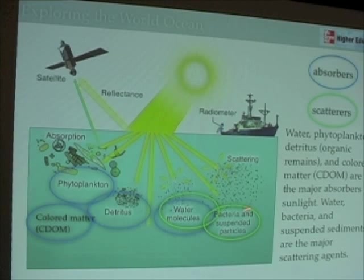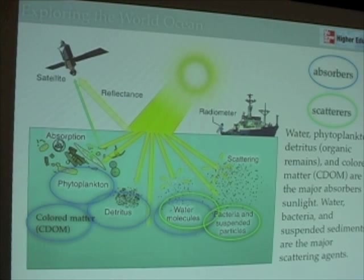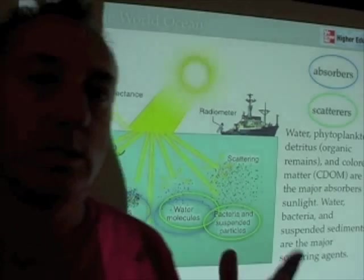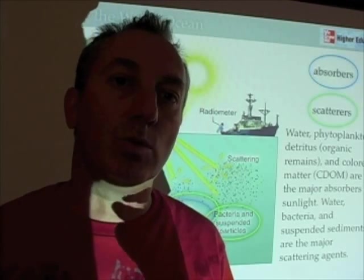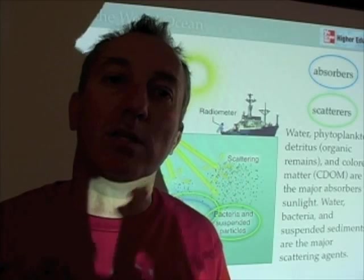Bacteria and inorganic particles generally act to scatter light. Although some kinds of bacteria — particularly the photosynthetic bacteria, which we classify as phytoplankton, such as cyanobacteria — will absorb light. Heterotrophic bacteria, the decomposing type bacteria that are not photosynthetic, are basically going to scatter light and move it in different directions. It is these processes — absorption and scattering — that give the ocean its color, but they also allow us to investigate what's happening in the water in ways we never could before.